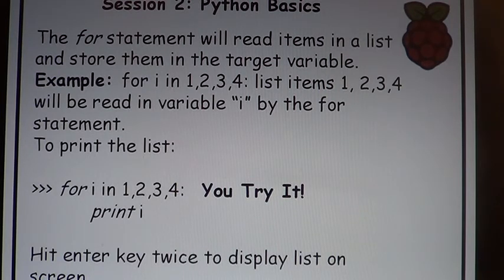Then we're going to read that list into the variable I. So when we're ready to get the data out, we use the print statement. And you can see right there, we just type in at the prompt, for I in 1, 2, 3, 4, colon, and hit the print I. So again, this is a nice little you try it, and you should see the results on the screen. So we're going to go ahead and do that demonstration, and you get to see how that for statement really works.